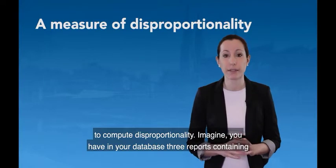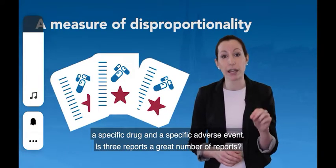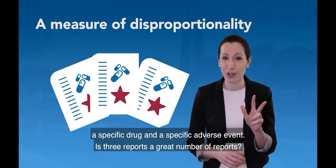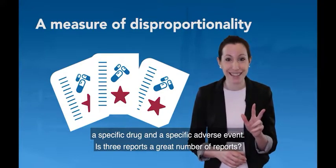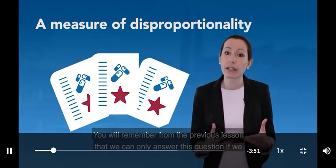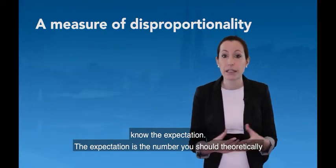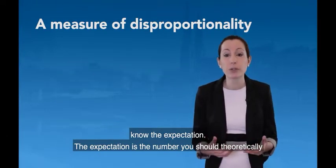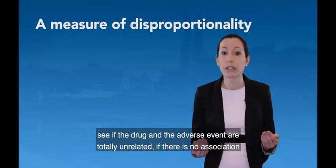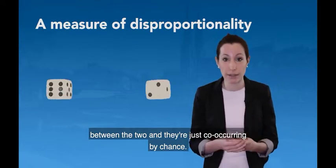Imagine you have in your database three reports containing a specific drug and a specific adverse event. Is three reports a great number of reports? You will remember from the previous lesson that we can only answer this question if we know the expectation. The expectation is the number you should theoretically see if the drug and the adverse event are totally unrelated — if there is no association between the two and they're just co-occurring by chance.